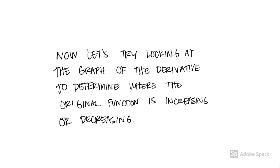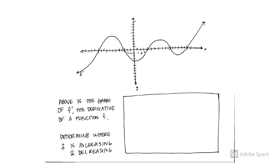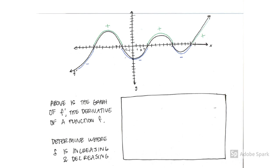Now let's try going the other direction. Let's look at the graph of the derivative instead of the original function, and determine from the graph of the derivative where the original function is increasing or decreasing. It can be a little bit subtle. Above is the graph of the derivative of a function f, which we can't see — so just looking at the graph of the derivative, determine where the original function is increasing and decreasing.